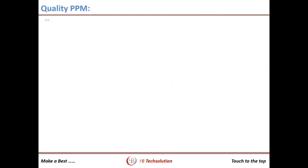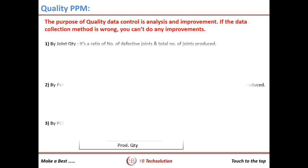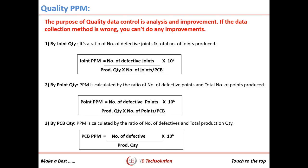Next is quality PPM. Quality data control is very important for process and product improvement. If the data collection and analysis method is wrong, you cannot achieve proper improvements. We suggest using the point PPM method. In 1990, the SMT target by point method was below 100 PPM. After 2010, SMT machine accuracy is less than 50 microns and quality has improved a lot, so now you can consider a target of 50 PPM by point. In one company, after consulting, we achieved less than 10 PPM within two years.